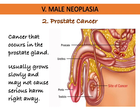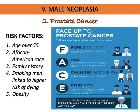Prostate cancer occurs in the prostate gland and usually grows slowly, potentially not causing serious harm right away. When detected early and still confined to the prostate, there is a better chance of successful treatment. According to the American Cancer Society 2019, around 1 in 9 males will be diagnosed with prostate cancer, but only 1 in 41 will die from it. Risk factors include age over 55, African American race, family history of prostate and breast cancer, smoking, and obesity.